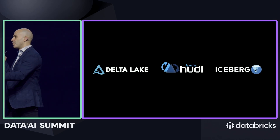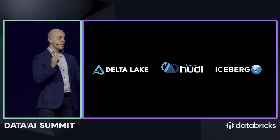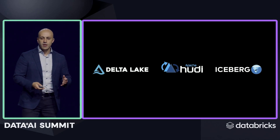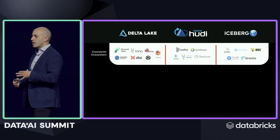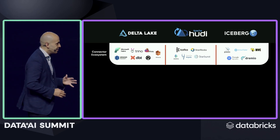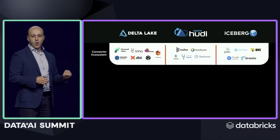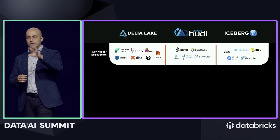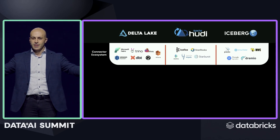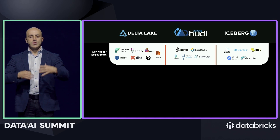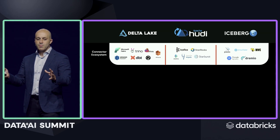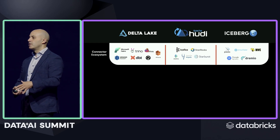Unfortunately, today you have to pick between three formats. You have to pick whether you want to build your lake house with Delta, or Apache Hudi, or Iceberg. Depending on which one you pick, you actually kind of lock yourself into one of these three — it's kind of like VHS versus Betamax. Only those ecosystems below each of these workflows work for that particular format. So for instance, if you're using the StarRocks connector with Hudi, that's great, but it won't work with Delta or Iceberg. This is a big problem.